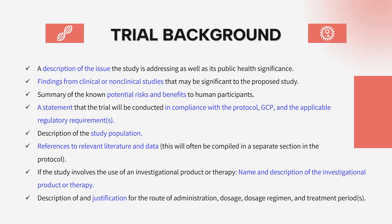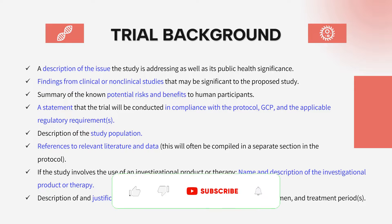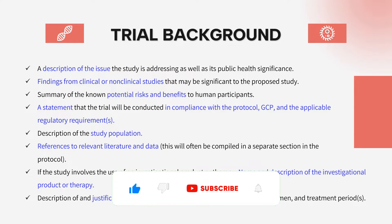The next section is the clinical trial background. In the background they will have a description of the issue — which particular disease is being targeted — and whether it has any significance to public health. They will also explain any clinical or non-clinical studies conducted before this protocol's implementation, the significance observed in those studies, and how this study will be conducted. There will also be a summary of the potential risks and benefits to the human participants.